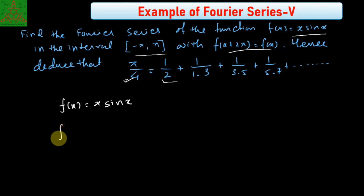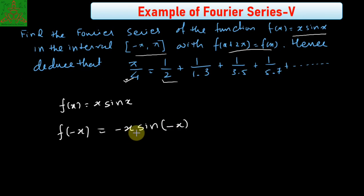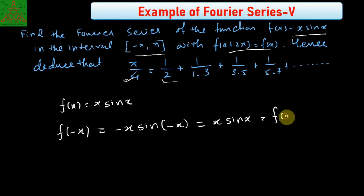We first note whether this function is an even function or odd function. So, replacing x with minus x: sin(−x) = −sin(x), so f(−x) = (−x)·(−sin x) = x·sin x. And hence it is f(x). So we conclude that f is an even function.